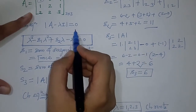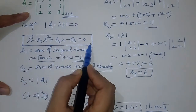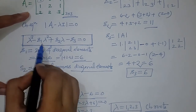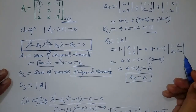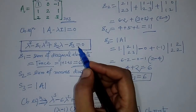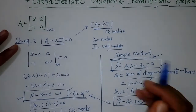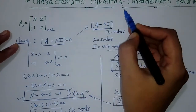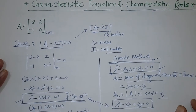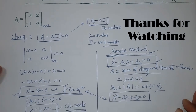In general, for a 3 by 3 matrix we write the characteristic equation in this form, taking alternate plus-minus signs. This is how we find the characteristic equation for matrices of order 2 and 3. Remember that characteristic equations and characteristic roots can only be found for square matrices. Thank you.